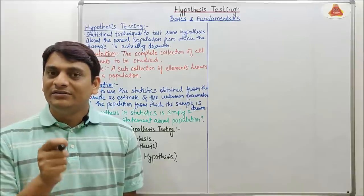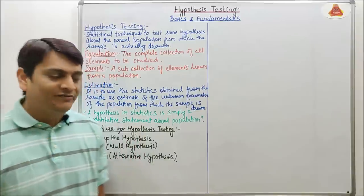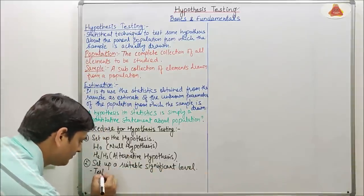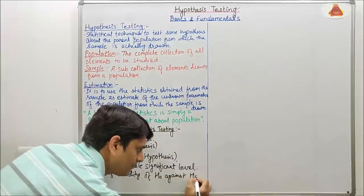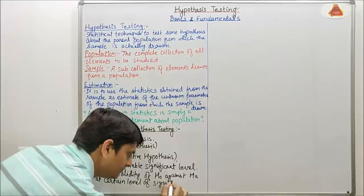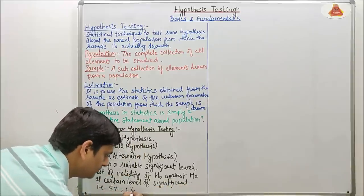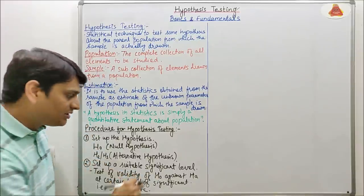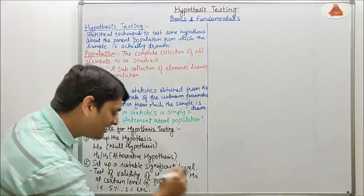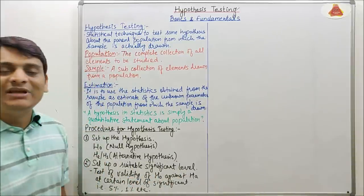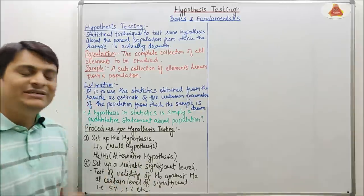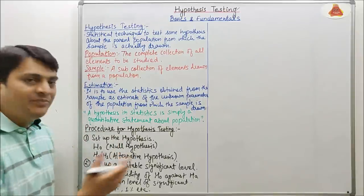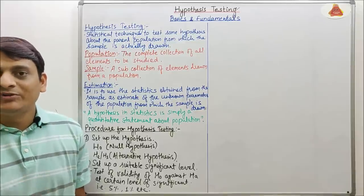Now coming to the second step: setting a suitable significance level. Testing the validity of the null hypothesis H0 against the alternative hypothesis HA takes place at a certain level of significance. This significance level is denoted in terms of percentage, sometimes denoted by alpha, and this percentage may be 5%, 1%, 0.1%, etc.